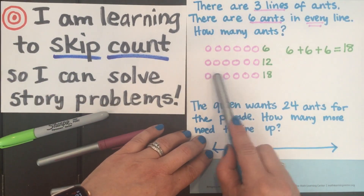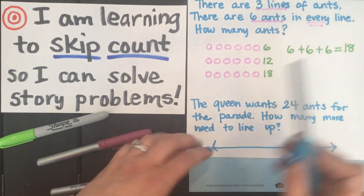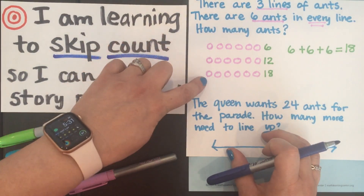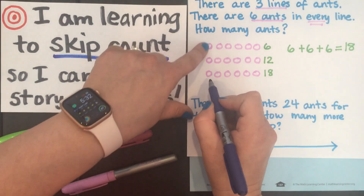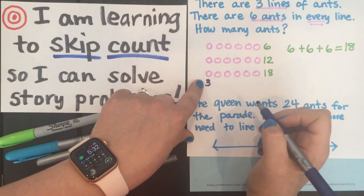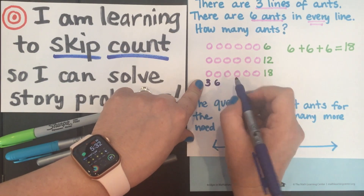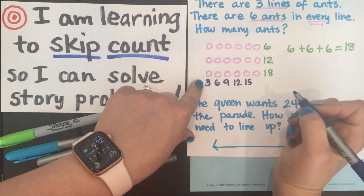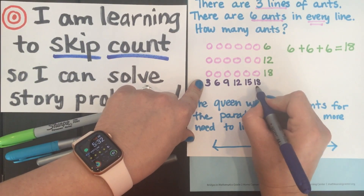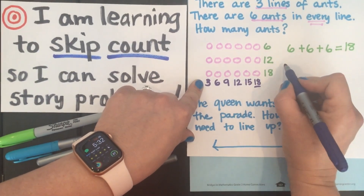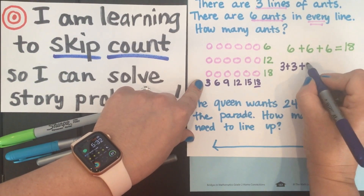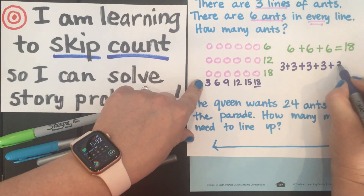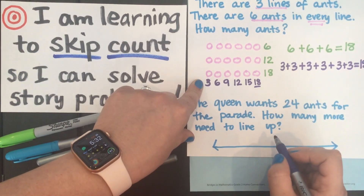I could also skip count by a different number if counting by sixes was a little tricky. If I look at the columns, the first column would have three. Then the next column gives me six, add three more gives nine, then 12, then 15, and adding that last column gives me 18 — the same answer as when I counted the rows. This time I was skip counting by threes, and I had six threes. Either way, the answer is 18 ants.